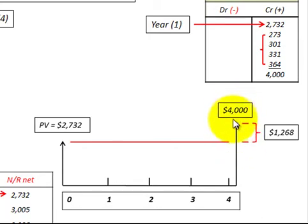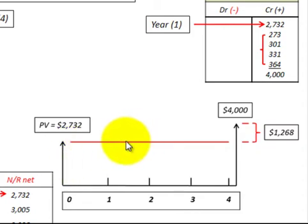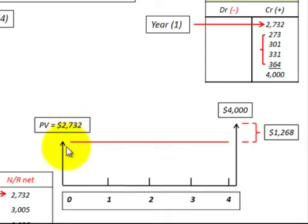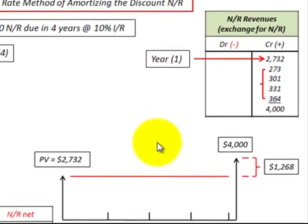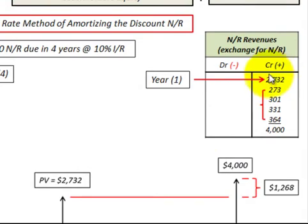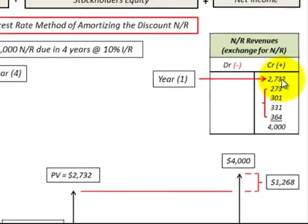Here's our $4,000 that we receive at the end of the fourth year, and we discount that back at the effective interest rate to determine its present value at the beginning of the first year. We take that present value amount and we record it here as a credit or an increase to notes receivable, and that would be $2,732.